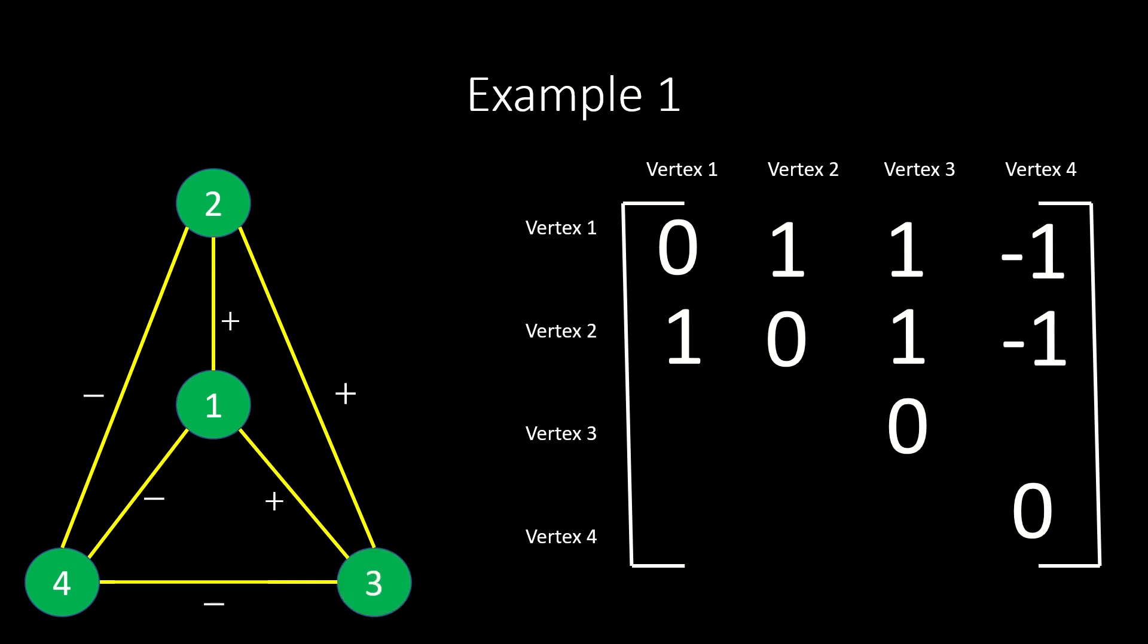Vertex 3 is adjacent to vertices 1 and 2 with positive edges, and adjacent to vertex 4 with a negative edge, so entries 3, 1 and 3, 2 are positive 1, and entry 3, 4 is negative 1.